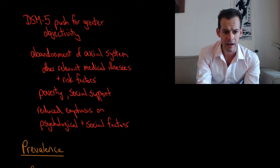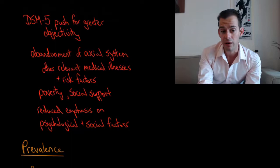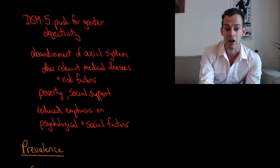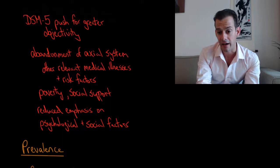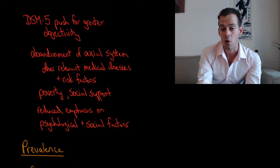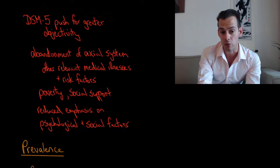So other risk factors like poverty or social support used to be considered in diagnosis in the DSM-4 but that's no longer part of the DSM-5. Some critics of the DSM-5 have suggested that this reduces emphasis on psychological and social factors that are actually important for understanding illness. And so there's some disagreement here on whether or not this push for greater objectivity is a good thing or whether it's causing us to ignore some of the subjective components that are actually important for understanding disorders.